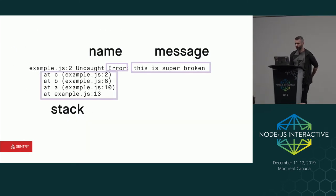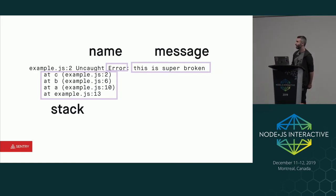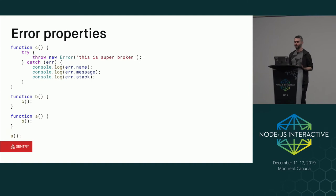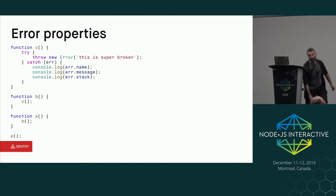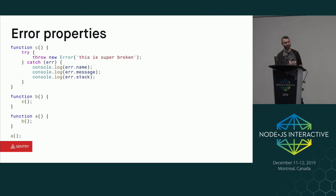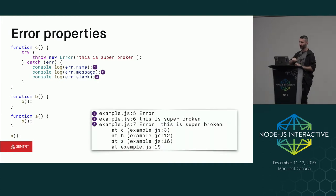The error object has three major components. There's the name — like 'reference error' — that's actually a property on the error object you can inspect. There's the message, which is the first parameter you pass to the error constructor. And then the stack is also a property. These are actual values you can inspect on the error object itself. So if instead of throwing the error and letting the program crash, you try and catch it, you can inspect the values of that error object and output them to the console.